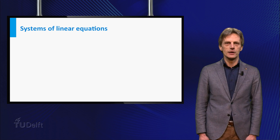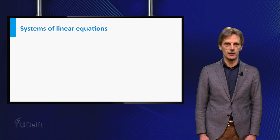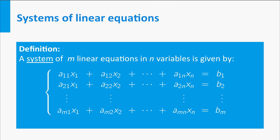If we combine several linear equations we obtain a system of linear equations. A system of n linear equations in n variables x1 up to xn looks like this.